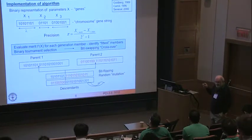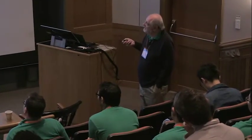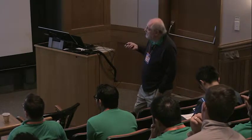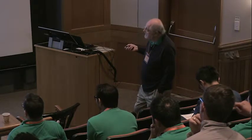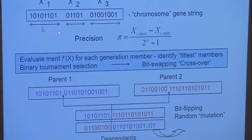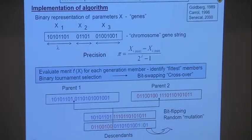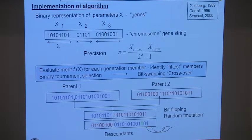You then run your highly accurate CFD code and evaluate a merit function for each generation member. Each member of your design space has its own chromosome string, and you look at its performance. You identify the fittest ones, call them parent 1 and parent 2, and interchange indices by bit swapping. You might also introduce random flipping. In this way, you're changing variables both randomly and with purpose to select the best performers. That's the basic idea behind the genetic algorithm.